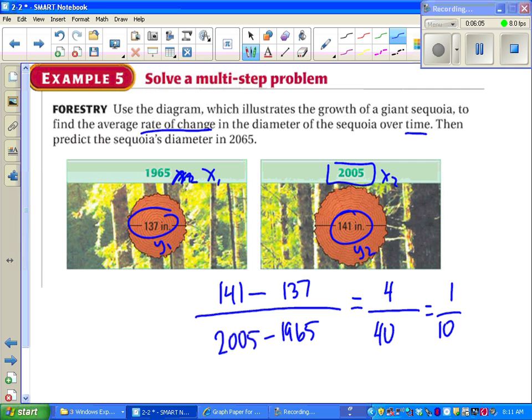And we've got to make sure we use our correct units. That's inches per year. We can't stop there, we just found the rate of change. This tree gets bigger by one-tenth of an inch every year. We want to know what's going on in 2065.